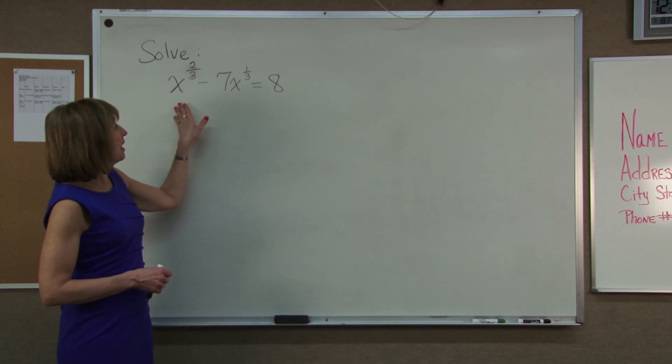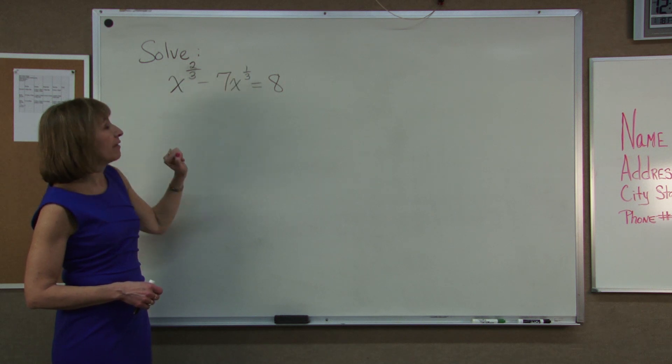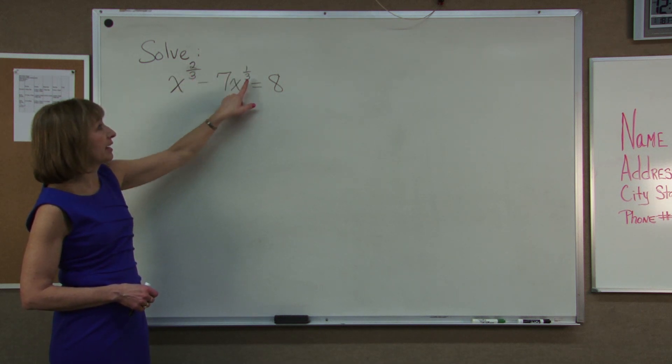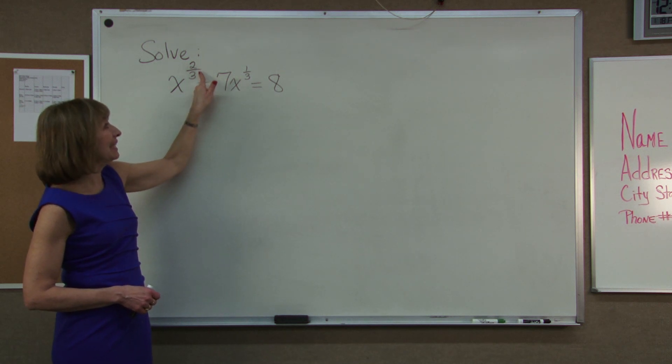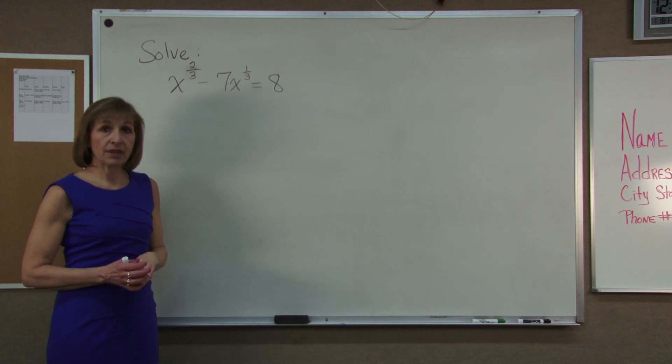Notice in this example I have x to the 2 thirds minus 7x to the 1 third is equal to 8. The only two terms that have the variable expressions are the x to the 2 thirds and the minus 7x to the 1 third. And 2 thirds is exactly double the value of 1 third. So this is a problem where that occurs.